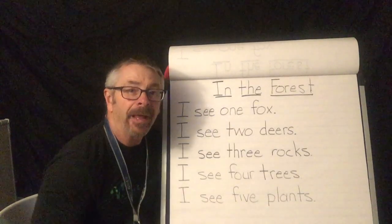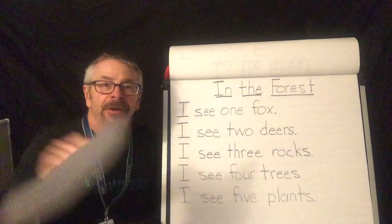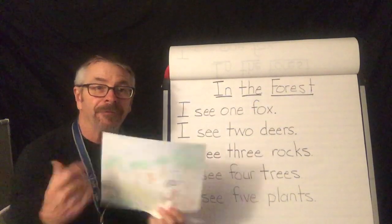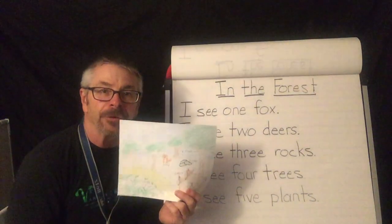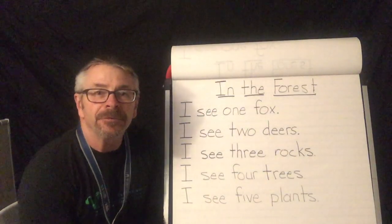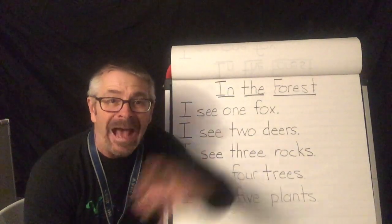So boys and girls, again, write your number poem and then draw a picture with all the things that you have in your poem. And I look forward to seeing some pictures on Class Dojo of your poem and your picture of the forest. All right. That's Mr. Betts and I'm out.